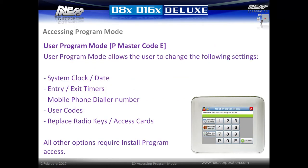User program mode allows the end user to change the system clock and date, change entry and exit timers, update a mobile phone number, change any user codes in the system, or replace missing radio keys or access cards. All other options require installer programming mode to access.